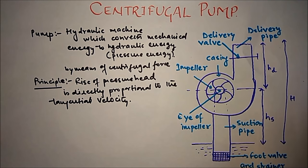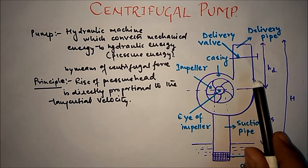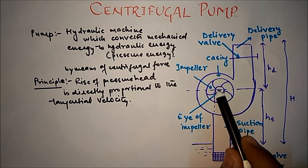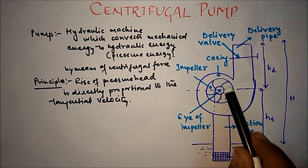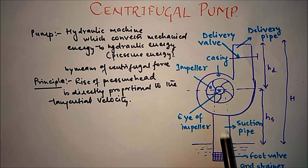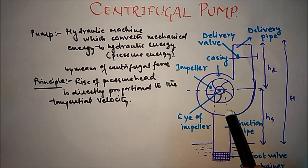Now let us move to the working of the centrifugal pump. The eye of the impeller is connected to the shaft, with the help of which the impeller is rotated. When the impeller rotates, it creates a low pressure zone. Due to this low pressure zone, water from the sump moves upward into the casing, and the casing is filled with water.